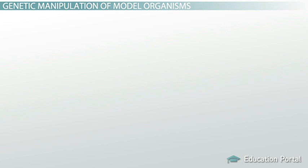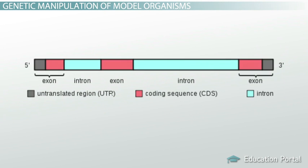Let's say we have a gene of unknown function in the human genome. We'll call our gene UFO — this will stand for the Unidentified Funny-Looking Order of Faces.